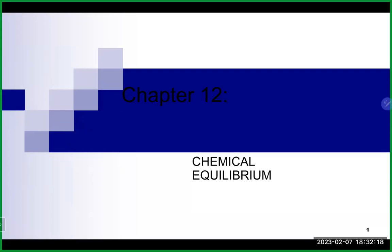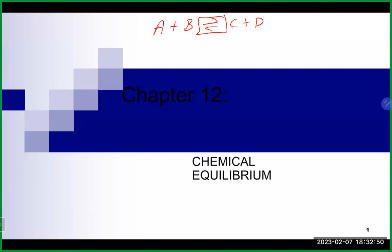We're going to start here with Chapter 12, which is about chemical equilibrium. All these notes can be found on our Canvas site. Chemical equilibrium really involves the idea of a certain type of reaction — a reversible reaction. You may recognize this from when we talked about weak electrolytes. This is basically a reversible reaction.